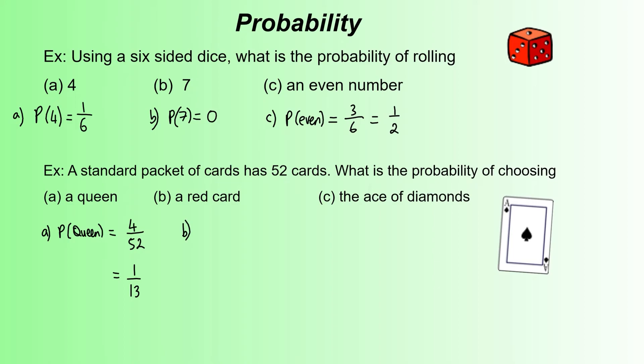Part B, a red card. The probability of picking a red card - well, half of the deck is red because the diamonds and the hearts are red, the spades and the clubs are black. So out of the 52 cards, 26 are going to be red. You should know really that's going to simplify to 1/2 because they're both divisible by 26. So that immediately simplifies down to 1/2. Half of a deck of cards is black, half of a deck of cards is going to be red.